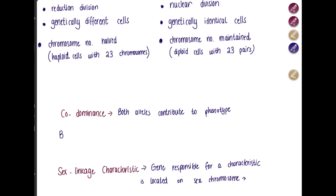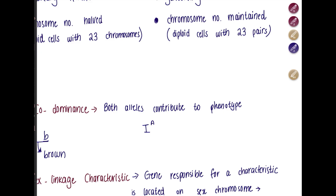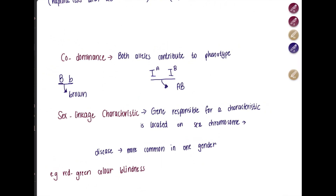Codominance is when both alleles contribute to a phenotype. Normally, if the dominant allele is present the recessive allele has no effect. However, for blood type, both alleles contribute — if you have I^A and I^B, the blood group is AB, not just A or B. Sex linkage is when the gene responsible for a characteristic is located on the sex chromosome, either X or Y, meaning the disease will be more common in one gender. A common example is red-green color blindness.